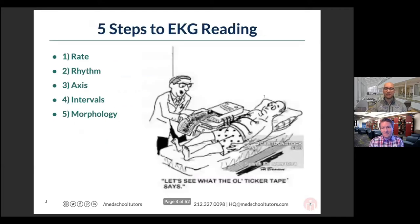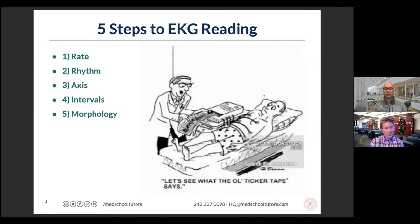The very first five steps you're always going to consider when you open up an EKG are: rate, rhythm, axis, intervals, and morphology. We'll run through each of these one by one, look at what we would look for in EKGs, and then apply them to some examples tonight. Let's dive into how we would read the rate on one of these things.